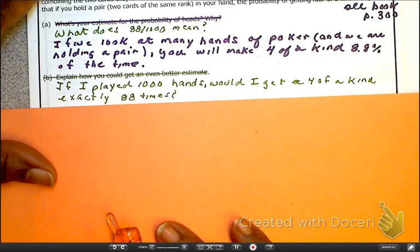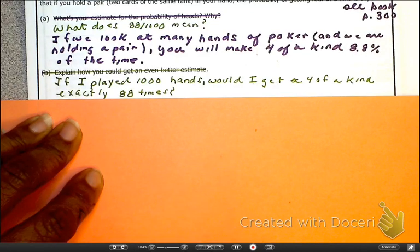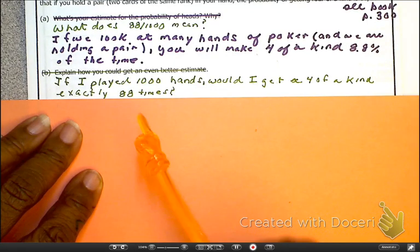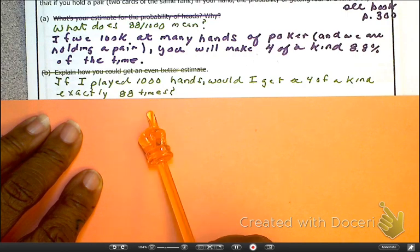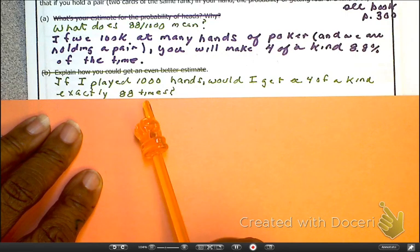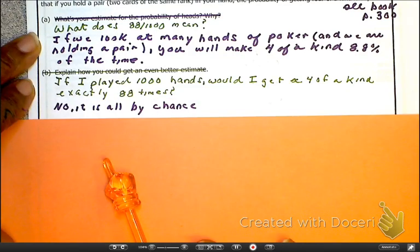So, maybe you don't want to go play the lottery on that one. And as we look at the next question, again, I screwed that one up. I must have cut and paste from the wrong problem. So, here it says, if I play it 1,000 hands, does that mean I'm going to get exactly four of a kind 88 times? You know that's not true. No, because it's all by chance.